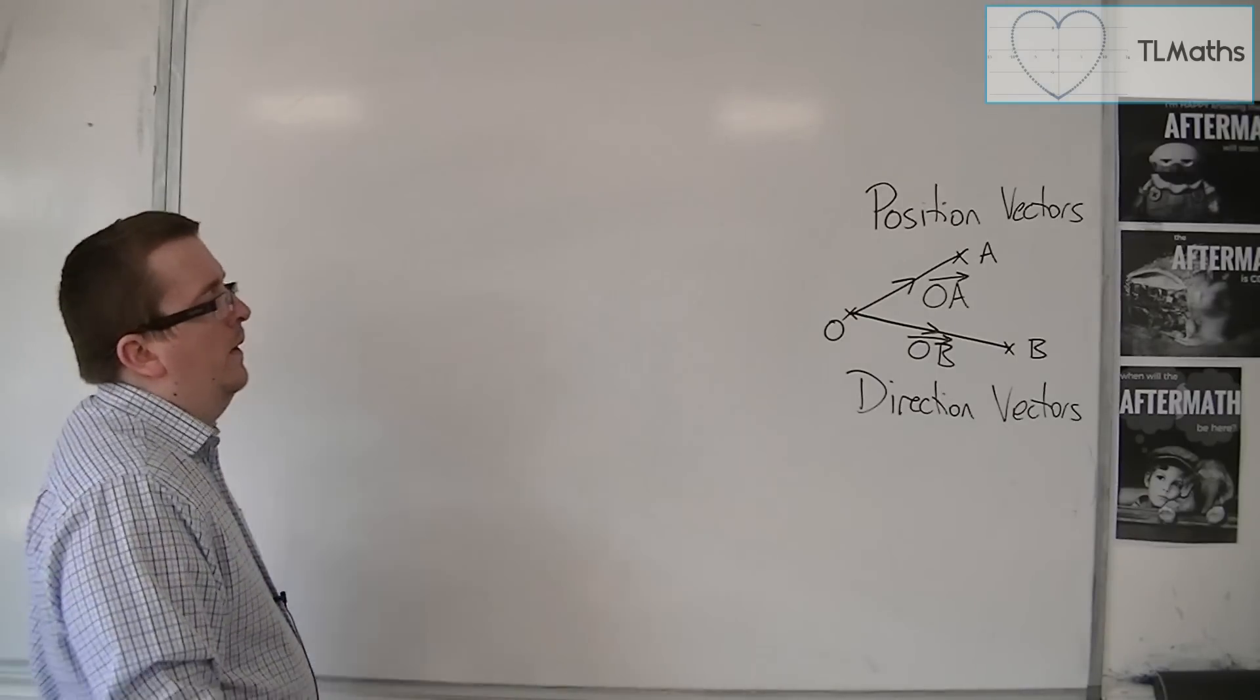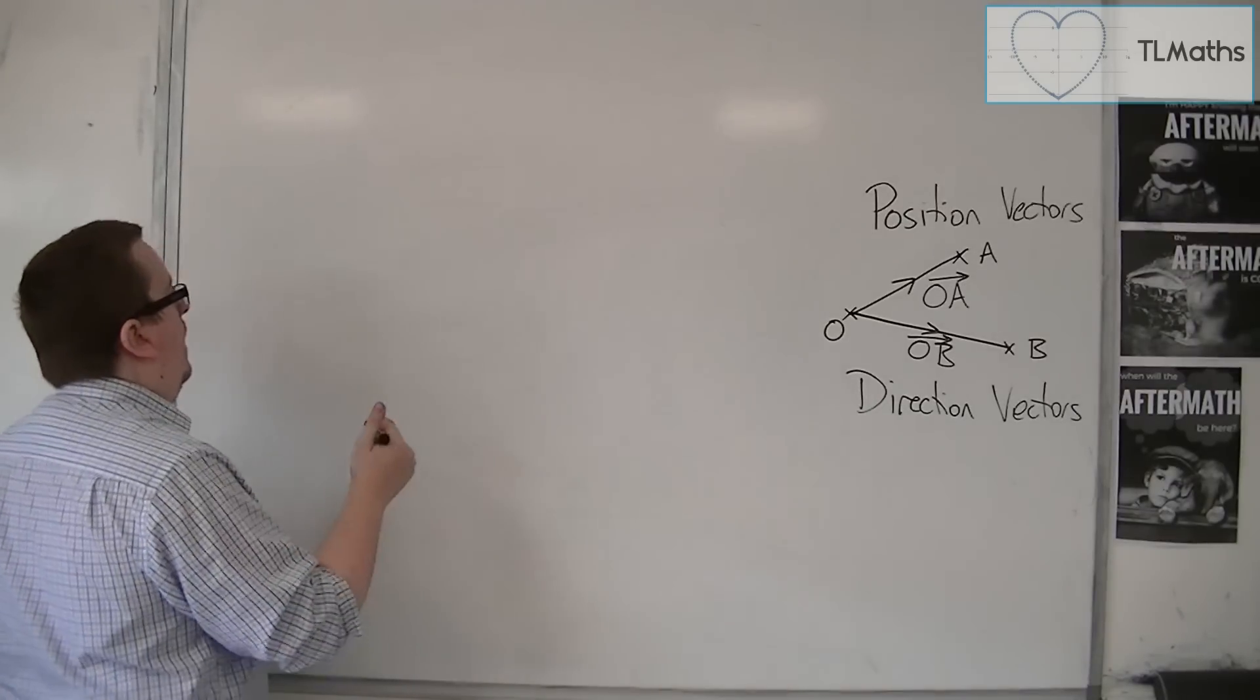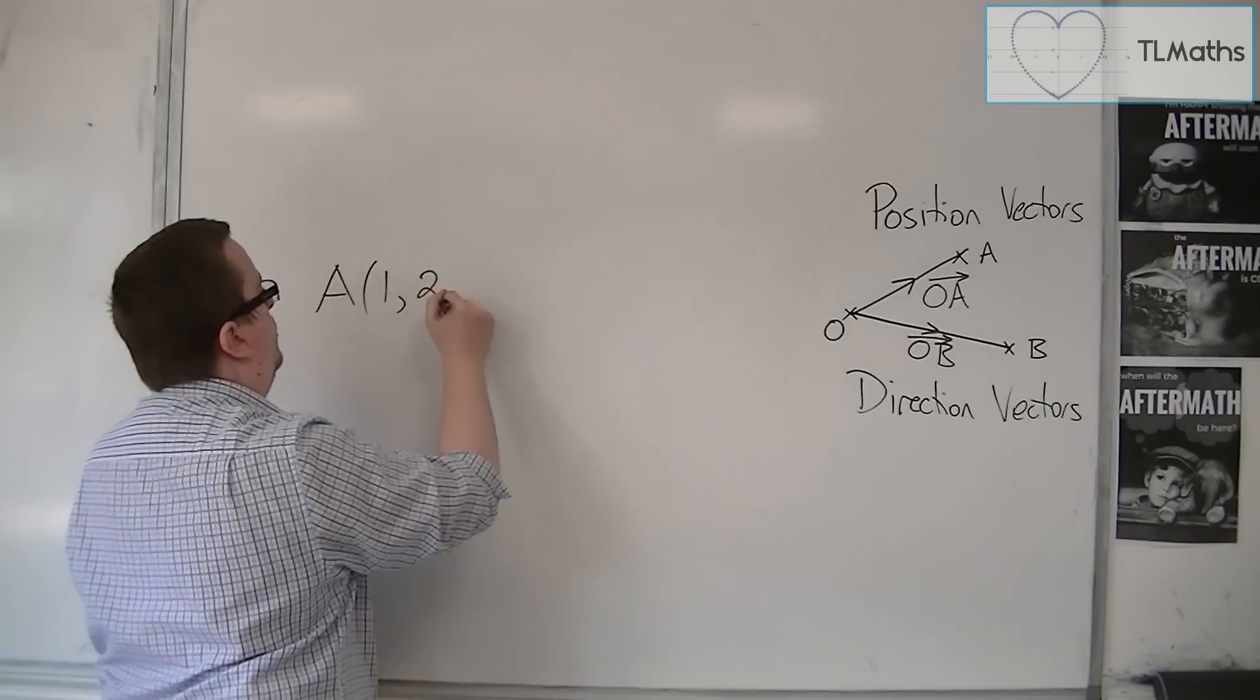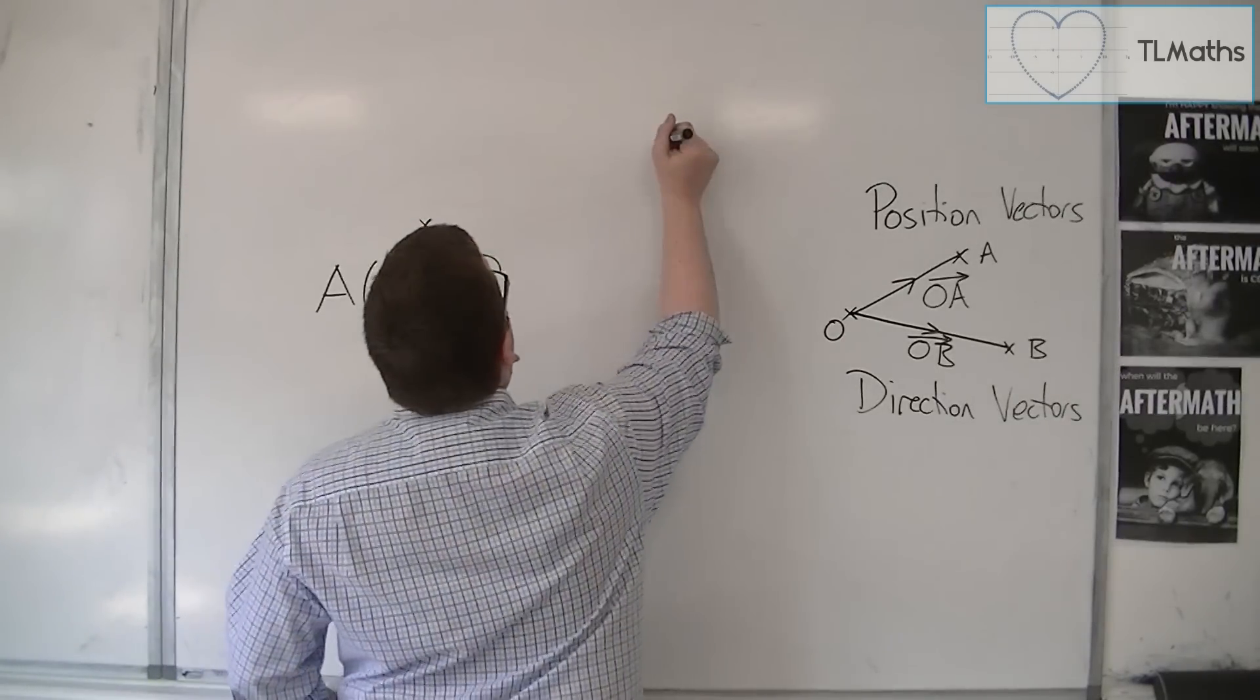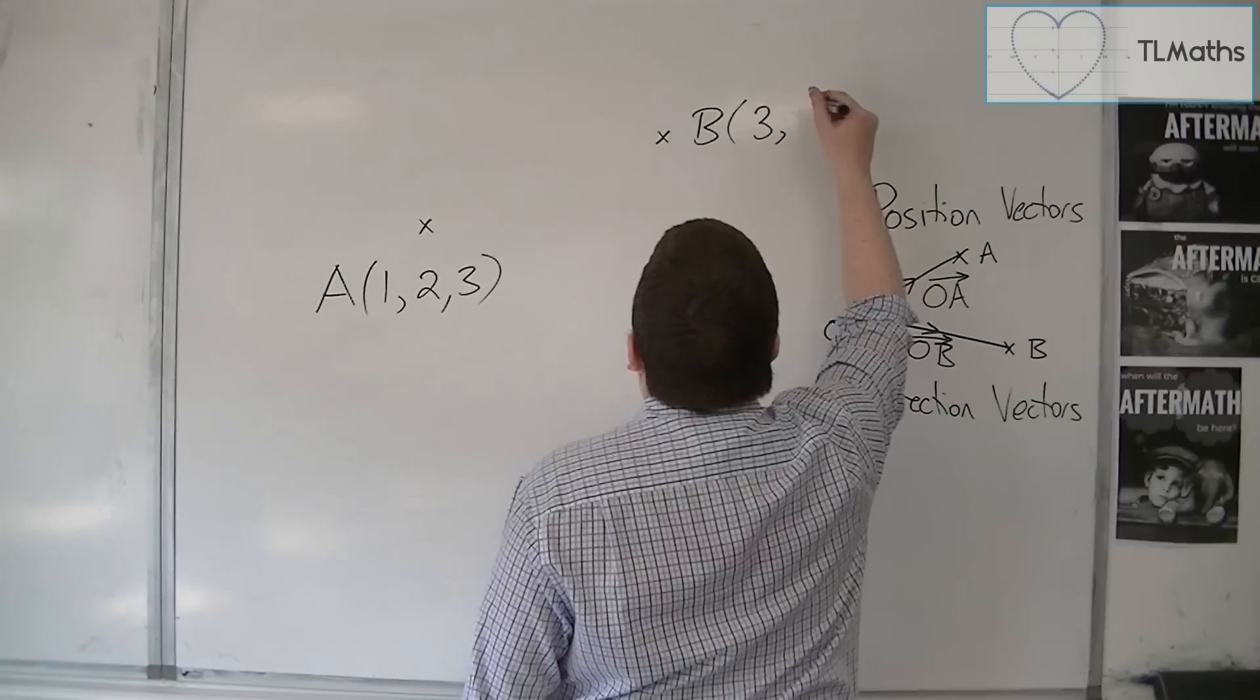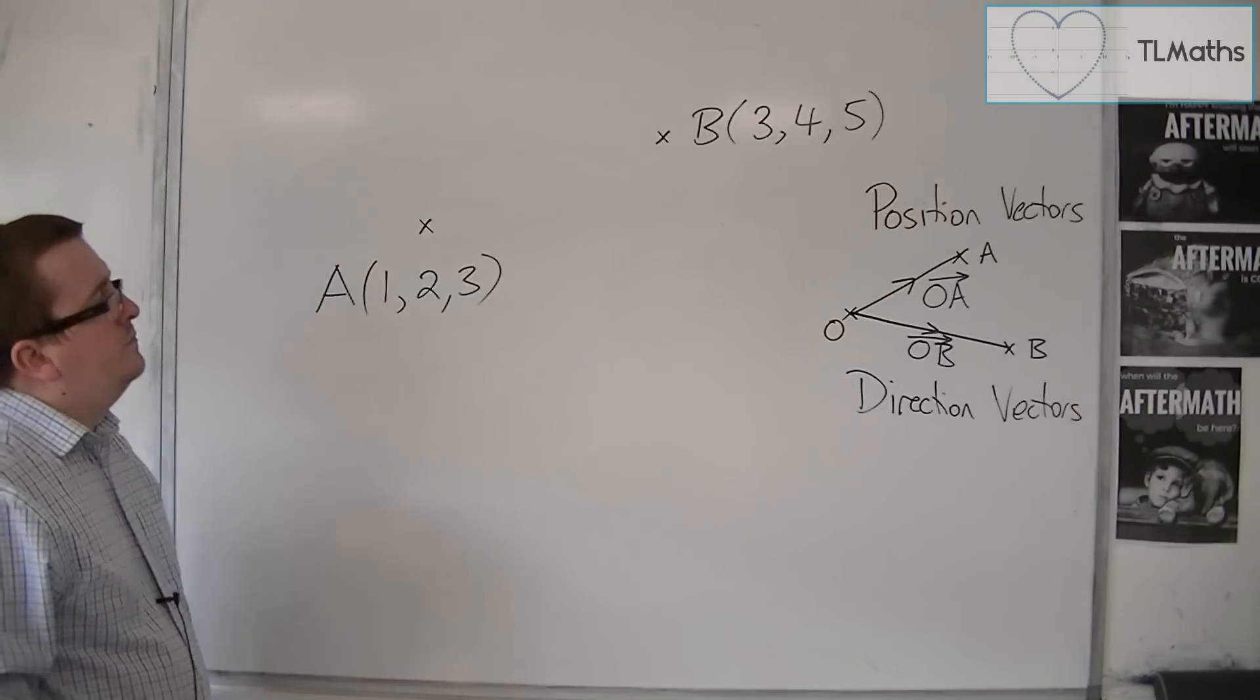Now, how about a direction vector? So let's say I need to get from the point A, which has the coordinates 1, 2, 3. So let's say that's the coordinate A, and I want to get to the coordinates B, which is 3, 4, 5.